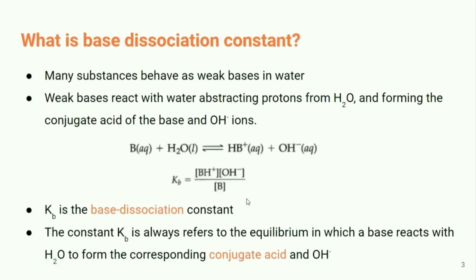Next, what is the base dissociation constant? Many substances behave as weak bases in water. These weak bases react with water, abstracting protons from H₂O, forming the conjugate acid of the base and OH⁻. So we get a conjugate acid and a conjugate base.